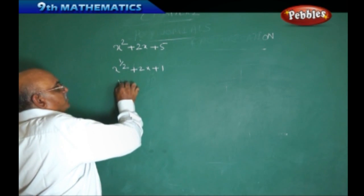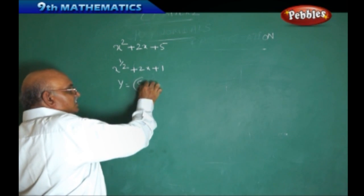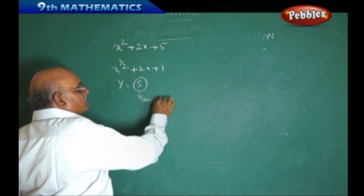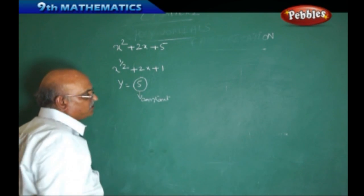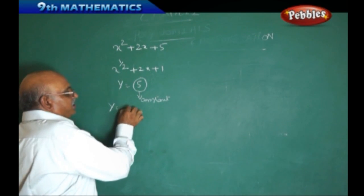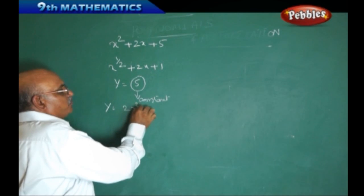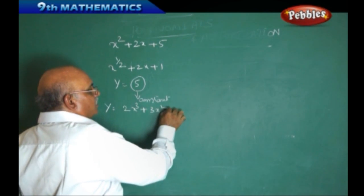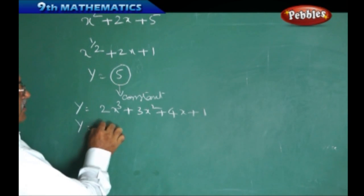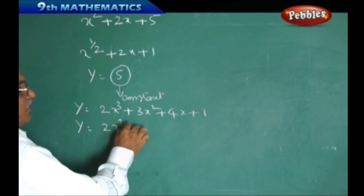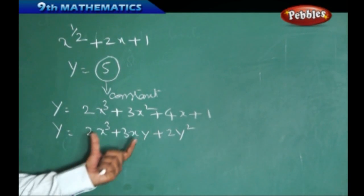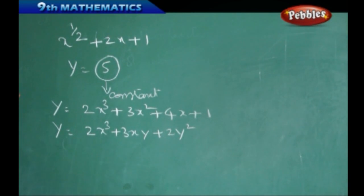Suppose you may ask: if I take y equal to 5, then this 5 is also a constant — it is called a constant polynomial. In the polynomial definition, there are so many examples we can take. For example, y equal to 2x cube plus 3x square plus 4x plus 1 is one polynomial. Another polynomial can be 2x cube plus 3xy plus 2y square — this is a polynomial with two variables, where x and y are considered as variables.